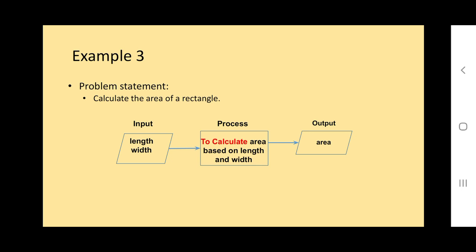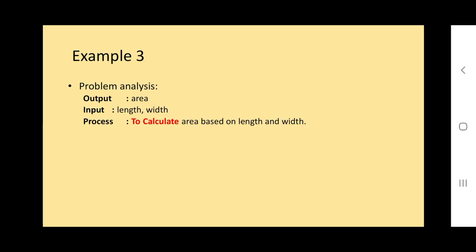Example three: To calculate area of rectangle. Output is area or area of rectangle. Input is length and width. Process is 'to calculate area based on length and width.' Note: in the process, the names must match what you wrote in output and input - same spelling, same capitalization. So output is area, input is length and width, process is to calculate area based on length and width.